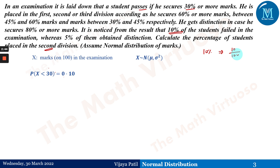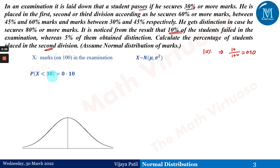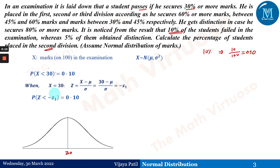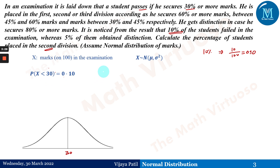Now we need to understand where Z1 will lie — positive or negative. If we place Z1 on the positive side and say P(Z < Z1) = 0.1, this is not pictorially possible because the left half alone already has probability 0.5, which is greater than 0.1.